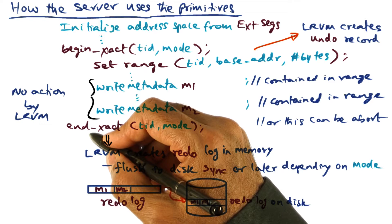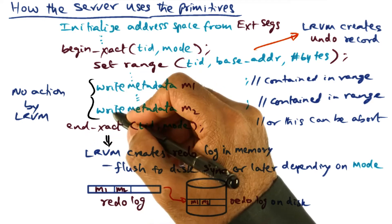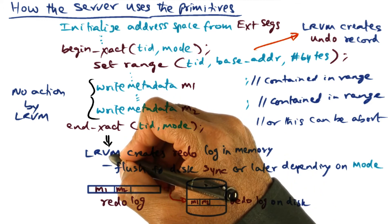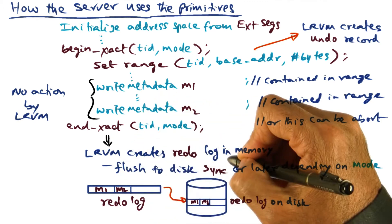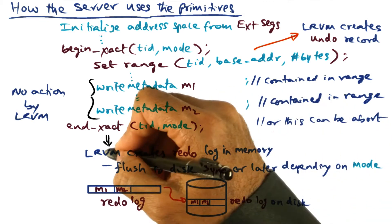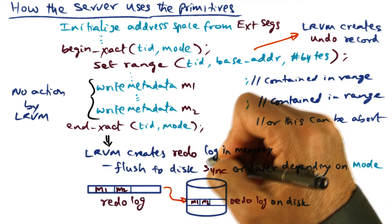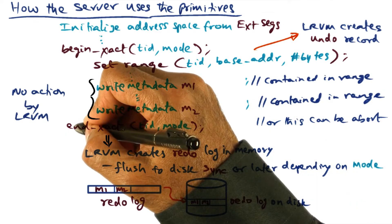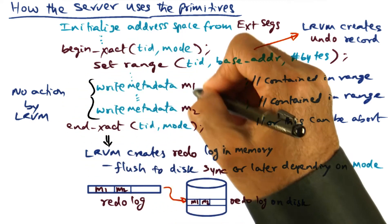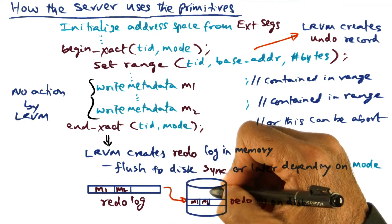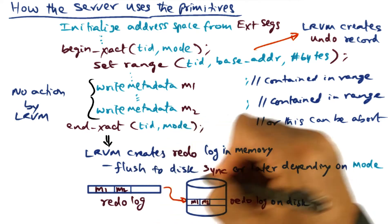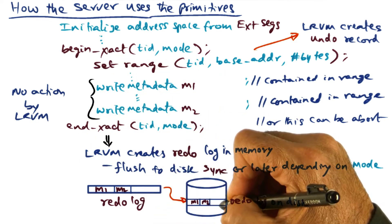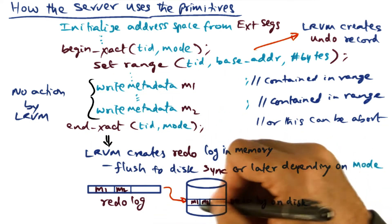Now the semantics of this transaction is, if it commits, then all these changes are now available on persistent storage. So what the LRVM library has to do is not only create the redo log record, which is a data structure in memory, so far as LRVM is concerned, but it also has to flush this redo log to the disk at the point of commit. And only after that, we can assume that all the changes that have been made in this critical section has been persisted on the disk. So it has to flush to the disk synchronously, meaning that this end transaction waits for this redo log to be flushed to the disk. At this point, it is on the disk.